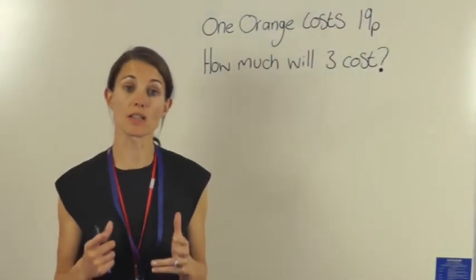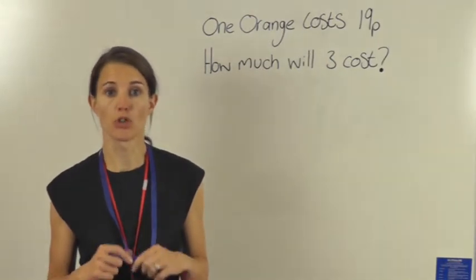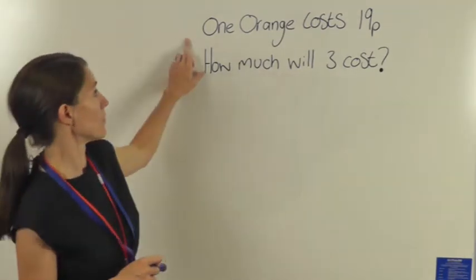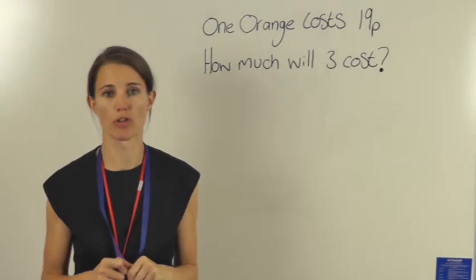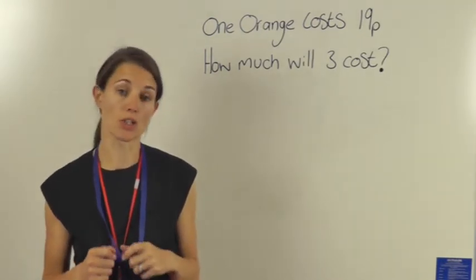This is question 16 of your Level 3 basic skills sheet. Your question might look something like this: One orange costs 19 pence, so how much do three oranges cost? Now the easiest way to do this is just to add the three lots of 19 pence together.